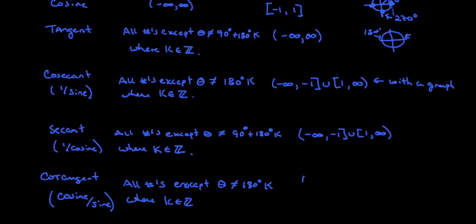Cotangent can get any number out, okay. So that's not going to be a problem. And there's all of your domains and ranges for your six trig functions.